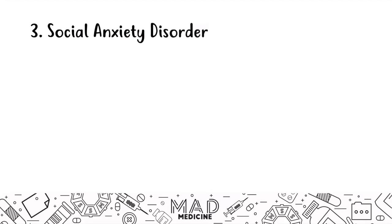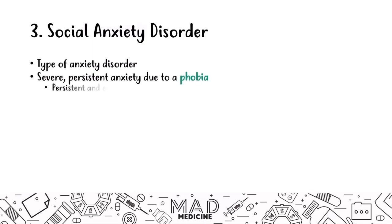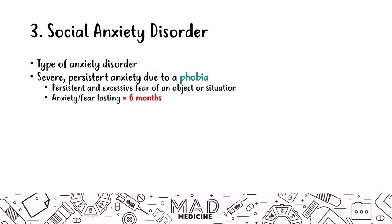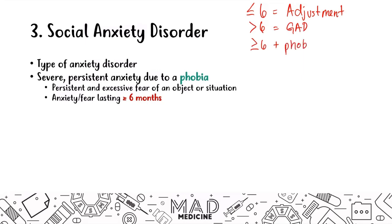Finally, we're going to talk about social anxiety disorder. It is a type of anxiety disorder in which a person has anxiety due to a phobia — a persistent or excessive fear of an object or situation. In social anxiety disorder, the anxiety and fear lasts greater than or equal to six months with a very specific phobia. That is the key distinction. So: less than six months is adjustment disorder, greater than six months is GAD, and greater than or equal to six months plus a phobia gives you social anxiety disorder.